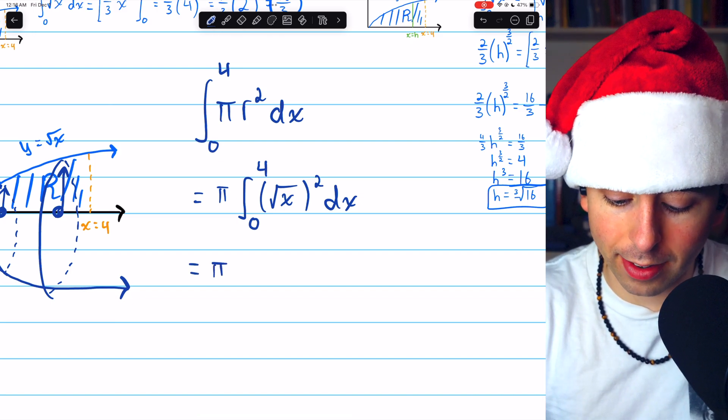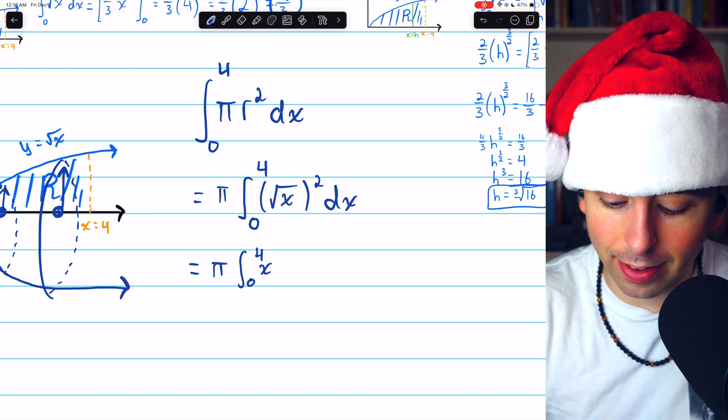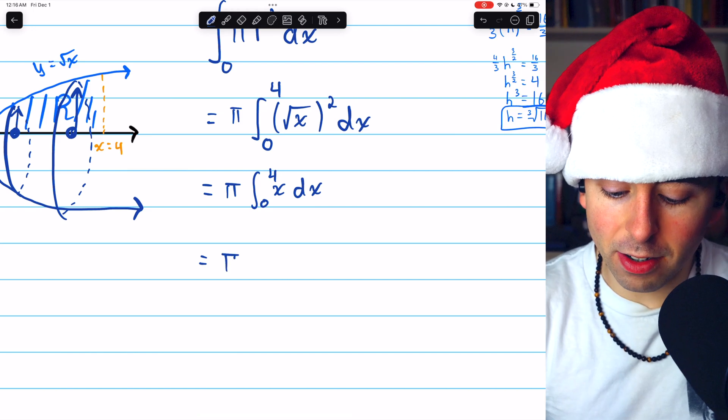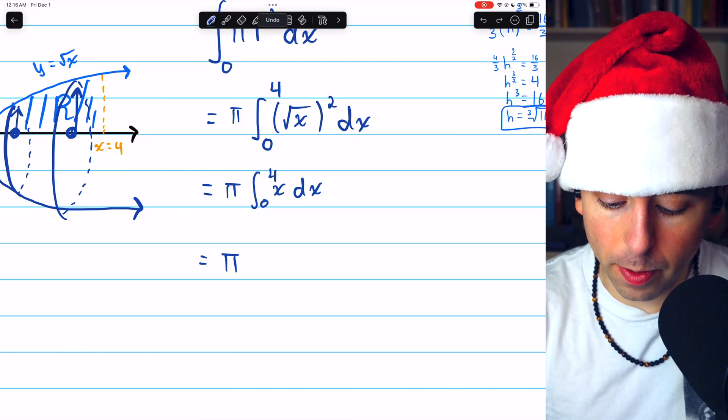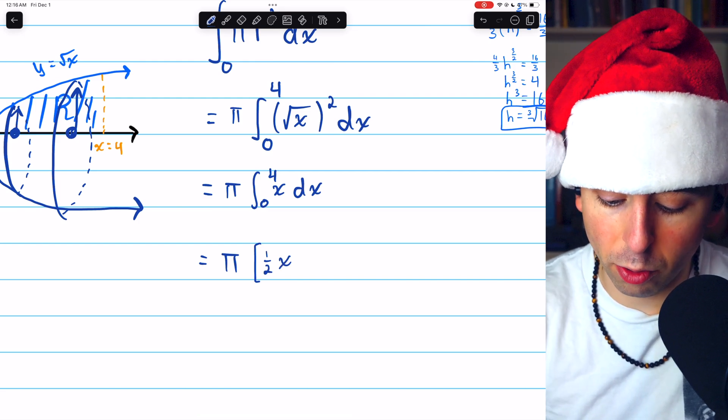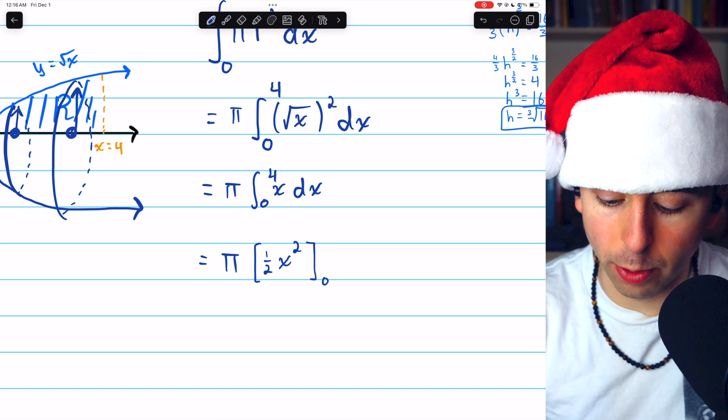This, of course, works out pretty nicely, because the square root of X squared is just X. So this is pi times the integral of X from 0 to 4. The integral of X, applying the reverse power rule, is just 1 half X squared. This is from 0 to 4.